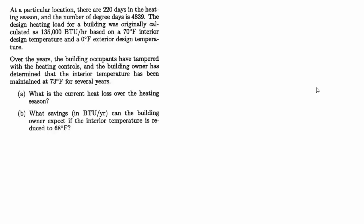101 Solved Mechanical Engineering Problems HVAC number six. At a particular location, there are 220 days in the heating season and the number of degree days is 4,839. The design heating load for a building was originally calculated as 135,000 BTUs per hour based on a 70 degree interior design temperature and a zero degree exterior design temperature.